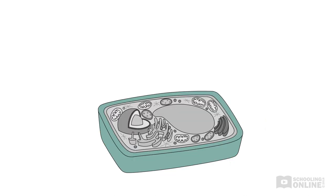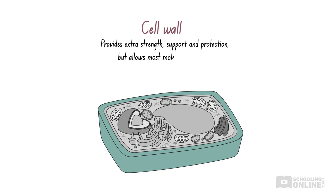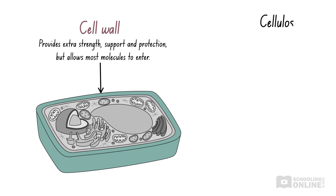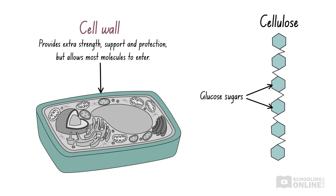Let's start at the outer layers of plant cells. Plants need to separate their internal components from the outside environment and protect themselves from harm. The outermost layer of plant cells is the cell wall, which is a rigid structure surrounding the cell. The cell wall provides extra strength, support, and protection to the plant cell, but allows most molecules to enter. The cell wall is made of cellulose, which is a polysaccharide — a long chain of sugar molecules. In this case, many glucose sugars are arranged in a straight chain to form cellulose.